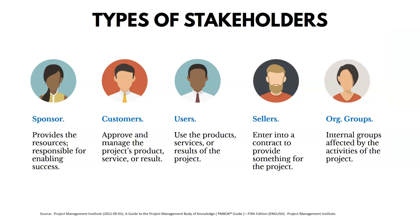Here are different types of stakeholders. A sponsor is the person providing the resources and responsible for enabling success. Customers are the ones approving and managing the project's product, service, or result. Users are those actually using the output or results of the project. Sellers are people entering into a contract to provide something for the project — on a construction project, for example, an outside company hired to lay the concrete. Other organizational groups are internal groups affected by the activities of the project.